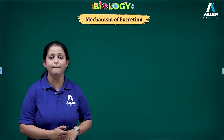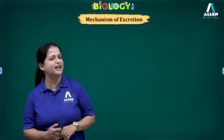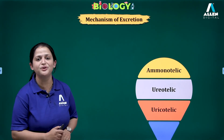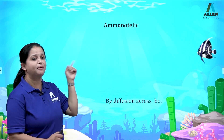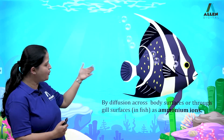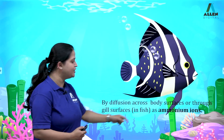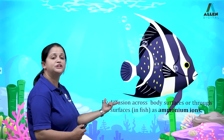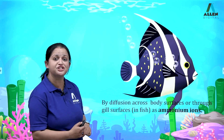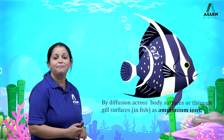The next concept is the mechanism of excretion — how these animals remove those waste materials. Let us discuss one by one, starting with ammonotelic, followed by ureotelic, and then uricotelic. In ammonotelic animals, almost all aquatic creatures remove ammonia as the waste material. For example, in fishes, ammonia is mainly released in the form of ammonium ions through simple diffusion across the body surface or through the gill surface. This is the mechanism followed by ammonotelic animals.